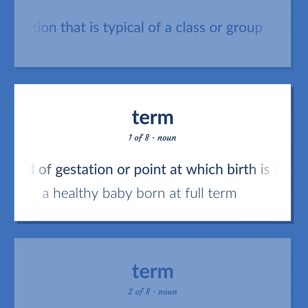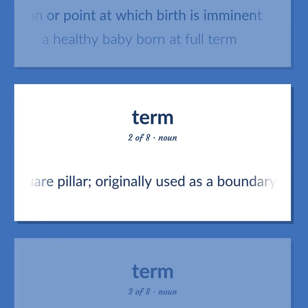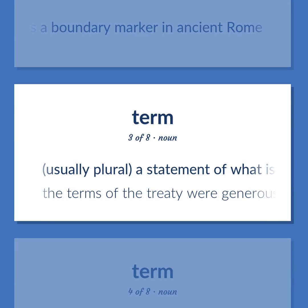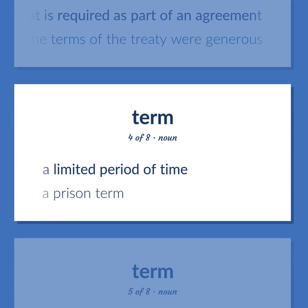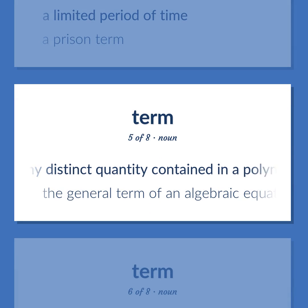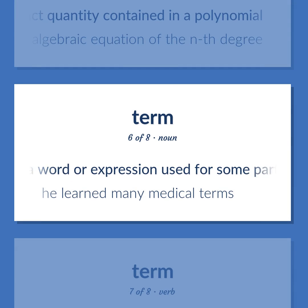TERM: The end of gestation or point at which birth is imminent — a healthy baby born at full term. Architecture: a statue or human bust or an animal carved out of the top of a square pillar, originally used as a boundary marker in ancient Rome. Usually plural: a statement of what is required as part of an agreement — the terms of the treaty were generous. A limited period of time — a prison term. Any distinct quantity contained in a polynomial — the general term of an algebraic equation of the Nth degree. A word or expression used for some particular thing — he learned many medical terms.